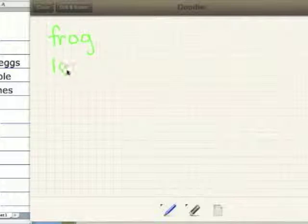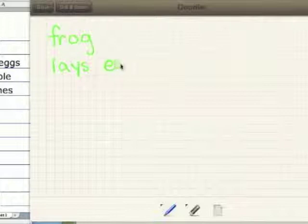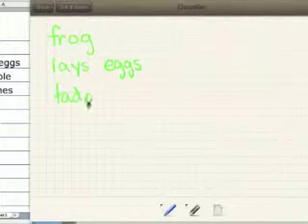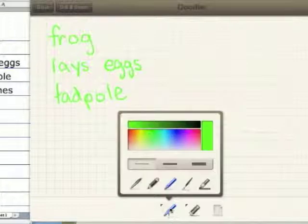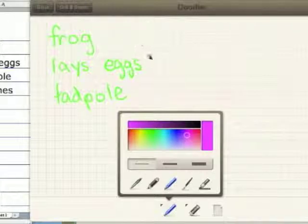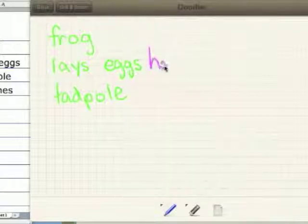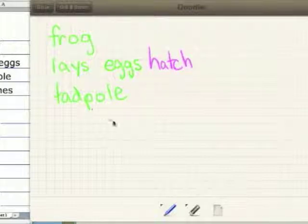The frog lays eggs. L-A-Y-S. Eggs. E-G-G-S. The eggs become a tadpole. T-A-D-P-O-L-E. And hatches is something that the eggs do. And the eggs hatch right here. H-A-T-C-H. And that is really the life of a frog.